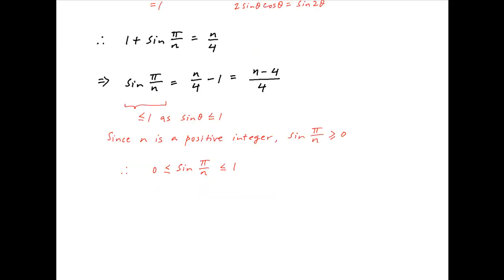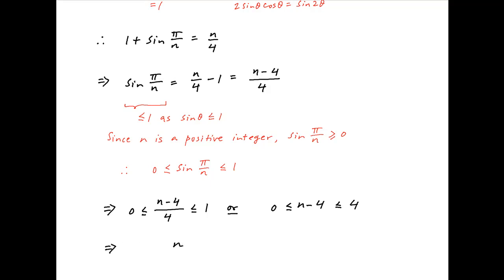Substituting the value of sin(π/n) obtained above, it follows that (n − 4)/4 ≥ 0 and ≤ 1. This gives n − 4 ≥ 0 and n − 4 ≤ 4. Adding 4 across, n is greater than or equal to 4 and less than or equal to 8.